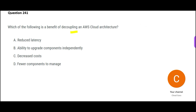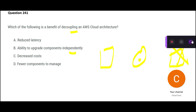Which of the following is a benefit of decoupling? We do decoupling so that there is independent operation between components. For example, you have a producer, a consumer, and in between you have SQS. If the consumer goes down and has to restart, your messages are still there — they will not be lost. It gives independence so one component can go down without losing data.